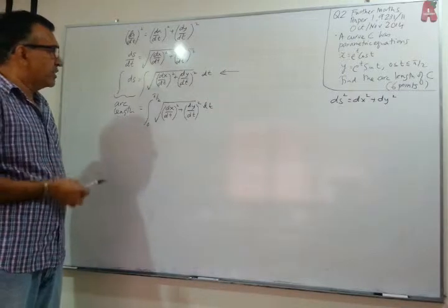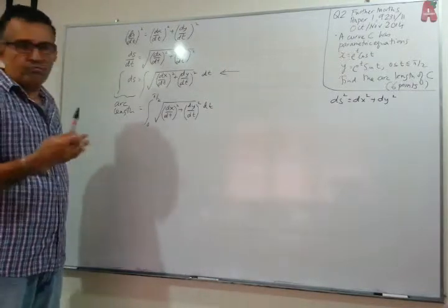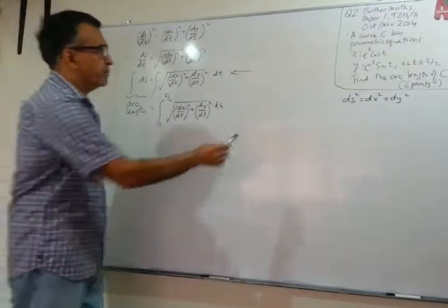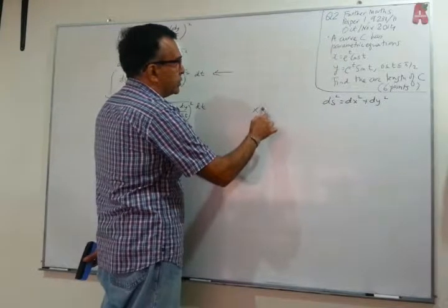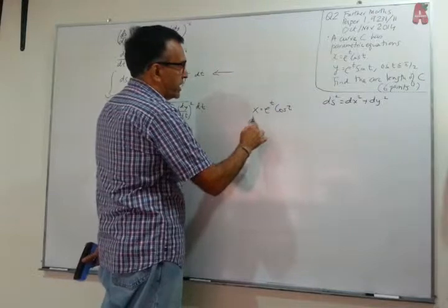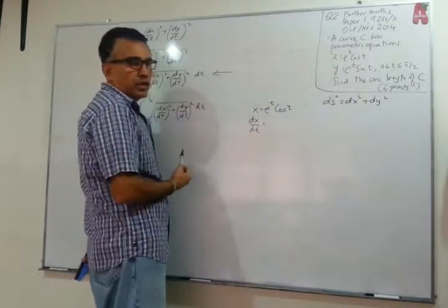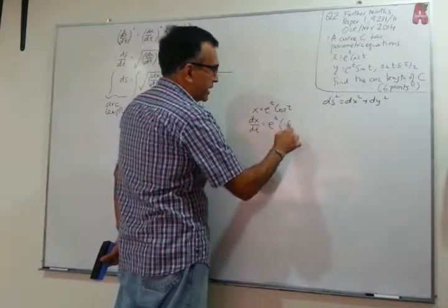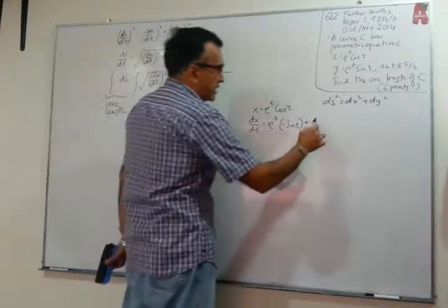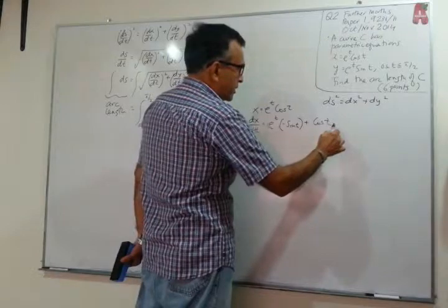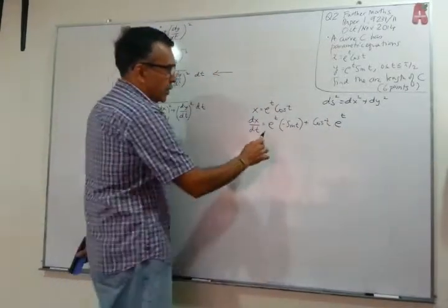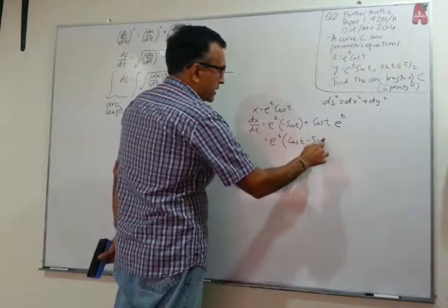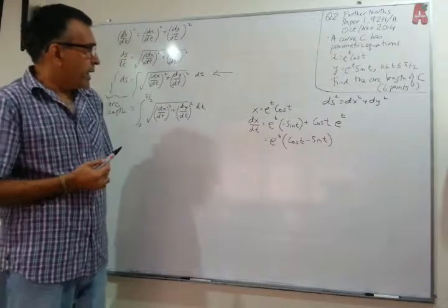What we need to do is find dx/dt, find dy/dt, square them, and place them under a square root symbol. So let's get started. We write x = e^t cos t and find dx/dt using the product rule. We have e^t times the derivative of cos t, which gives negative sin t, plus cos t times the derivative of e^t, which gives e^t. Taking e^t outside, we get dx/dt = e^t(cos t − sin t).